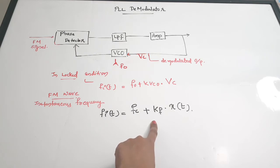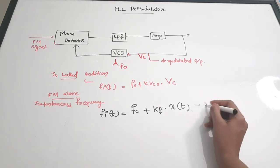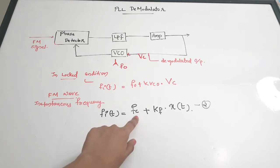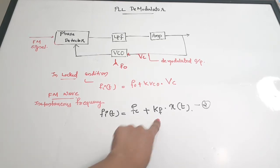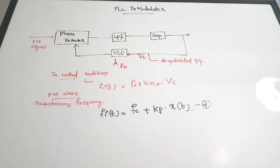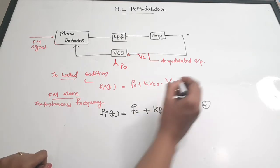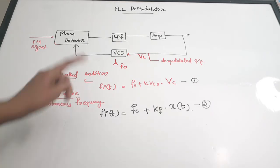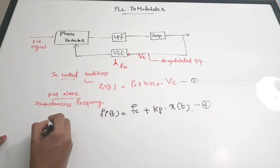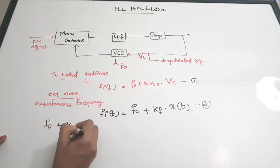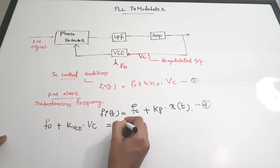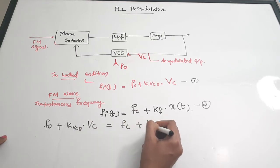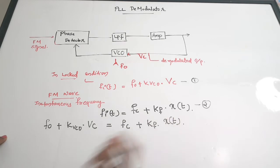That is Equation 2, where FC is the carrier frequency, KF is the frequency sensitivity, and X(t) is the modulating signal. Now let us compare Equations 1 and 2. We can equate both equations: F0 plus KVCO × VC equals FC plus KF × X(t).